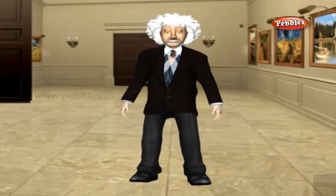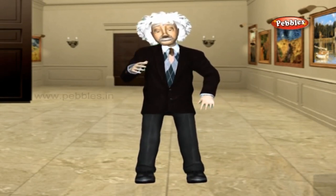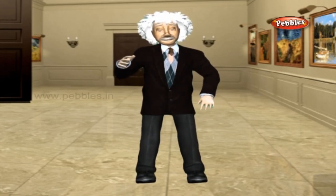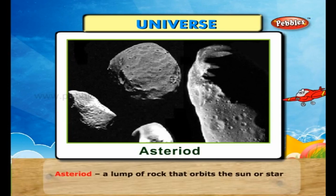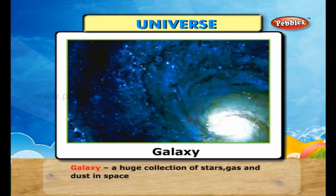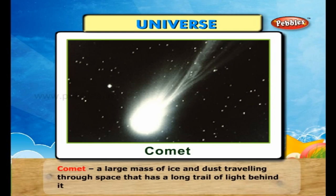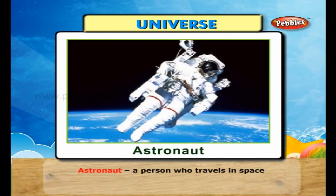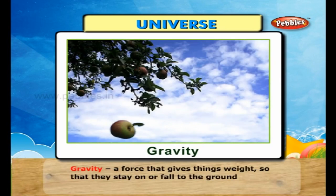Let us learn about the universe. The universe is the whole world or sphere in which something exists or prevails. An asteroid is a lump of rock that orbits the sun or a star. A galaxy is a huge collection of stars, gas and dust in space. A comet is a large mass of ice and dust travelling through space that has a long trail of light behind it. An astronaut is a person who travels in space. Gravity is a force that gives things weight so that they stay on or fall to the ground.